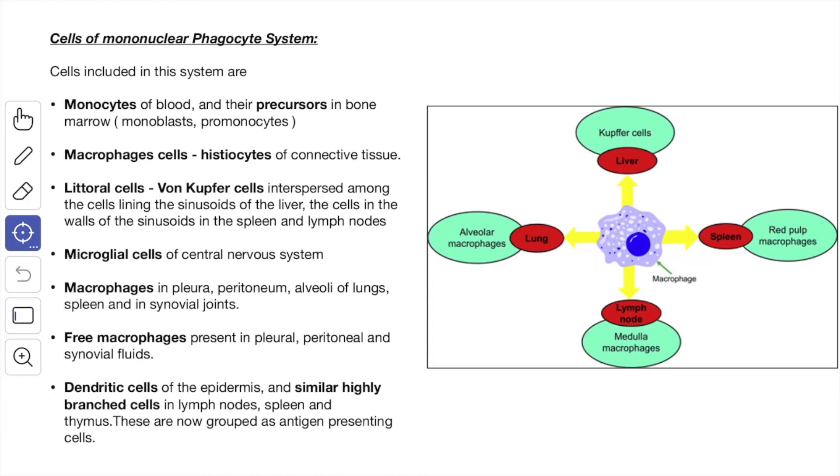We'll see the cells of mononuclear phagocyte system. The cells included in this system are the monocytes of the blood and their precursors in the bone marrow which includes the monoblast and promonocytes, then the macrophage cells that are called the histiocytes of the connective tissue.